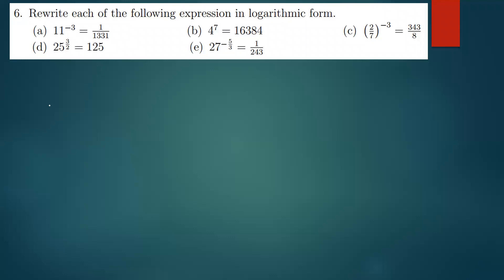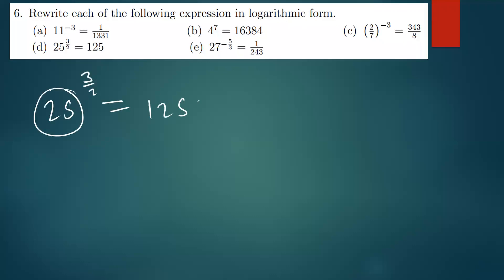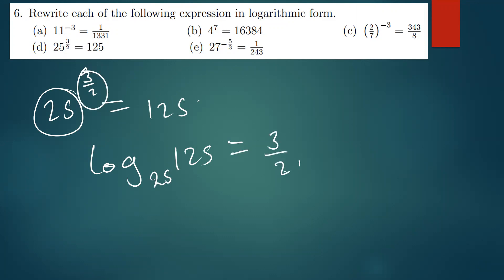The next one is 25 to the power 3 over 2 being equal to 125. Converting this to log is simple: the base is still the base, so we say log 125 with base 25, and this is equal to the power which is 3 over 2.